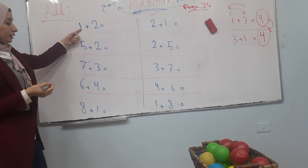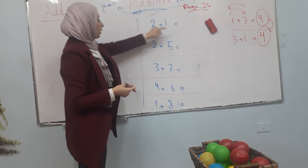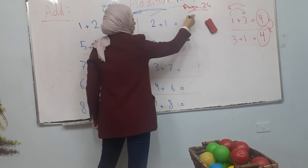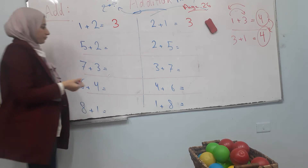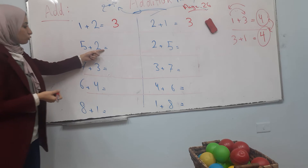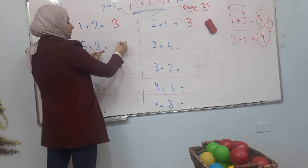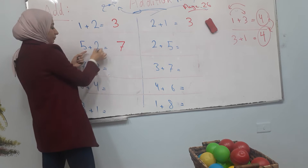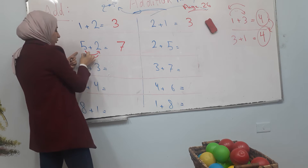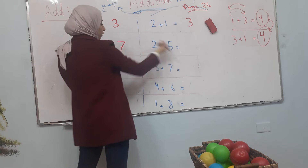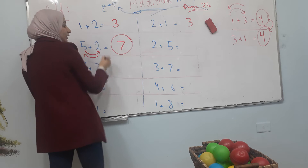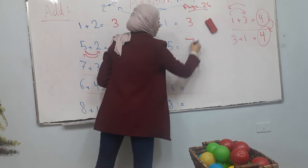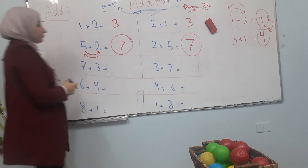One plus two equals three. إذا؟ Two plus one equals three as well. Five plus two equals seven. What about two plus five? We switched the numbers — two is now first and five is second. Does the result change? No. Two plus five is the same as five plus two. The result is seven.